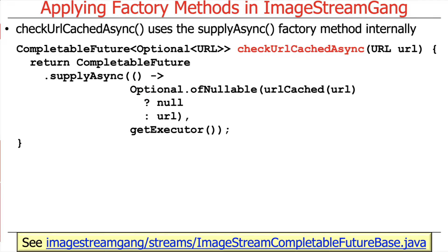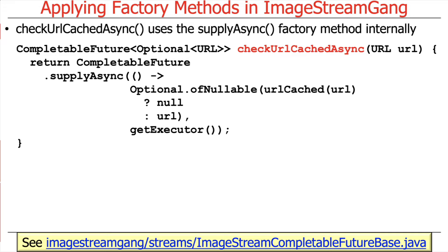Let's take a look at the checkURLCachedAsync behavior, which is just a good old Java method. Nothing too surprising about that. Here's what we do: we call supplyAsync, which is the very common way of getting things going in an asynchronous model with completable futures. And we're going to do some fancy footwork with the optional factory method. There are several factory methods going on here — there's supplyAsync, which is a factory method for completable future.